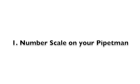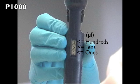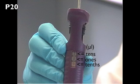This section should help you avoid errors commonly made by students. Getting the number scale wrong is an error commonly made. On the P1000, the first number, which is red, represents thousands of microliters; the second number represents hundreds of microliters, and the third number represents tens of microliters. On the P200, the first number displayed represents hundreds of microliters, the second represents tens of microliters, the third represents ones of microliters, and the third number, which is red, represents tenths of microliters.